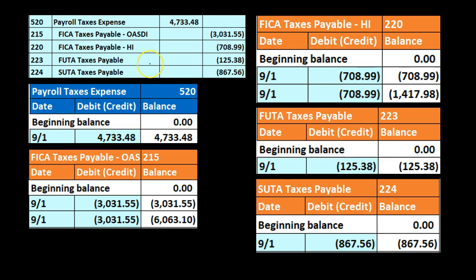Now let's look at the general ledger to see this data posted. Here's our journal entry. Looking at the payroll expenses, we see the payroll expense started at zero, then we debit it: 4,733.48 — increasing it to a balance of 4,733.48. Then account 215, OASDI, which we are crediting 3,031.55. Before this journal entry the OASDI balance was 3,031.55; we are increasing it by 3,133.55 in the credit direction to 6,063.10.